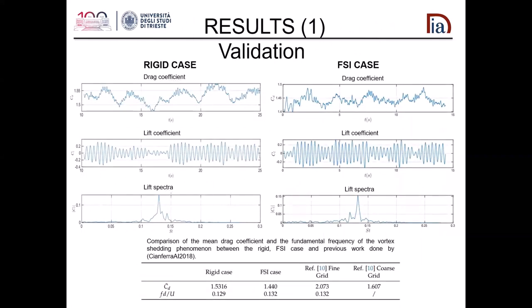For the results, we first study the hydrodynamic coefficients in the rigid configuration, recording the time history of drag and lift coefficients. We compare the mean drag coefficient with previous reference data and a 2D case just to have an order of magnitude, and we find the Strouhal number — the mean frequency of the von Kármán vortex shedding. We then study the elastic case similarly, and we see that the mean drag coefficient is less compared to the rigid one, while the fundamental frequency of detachment vortices is quite similar.